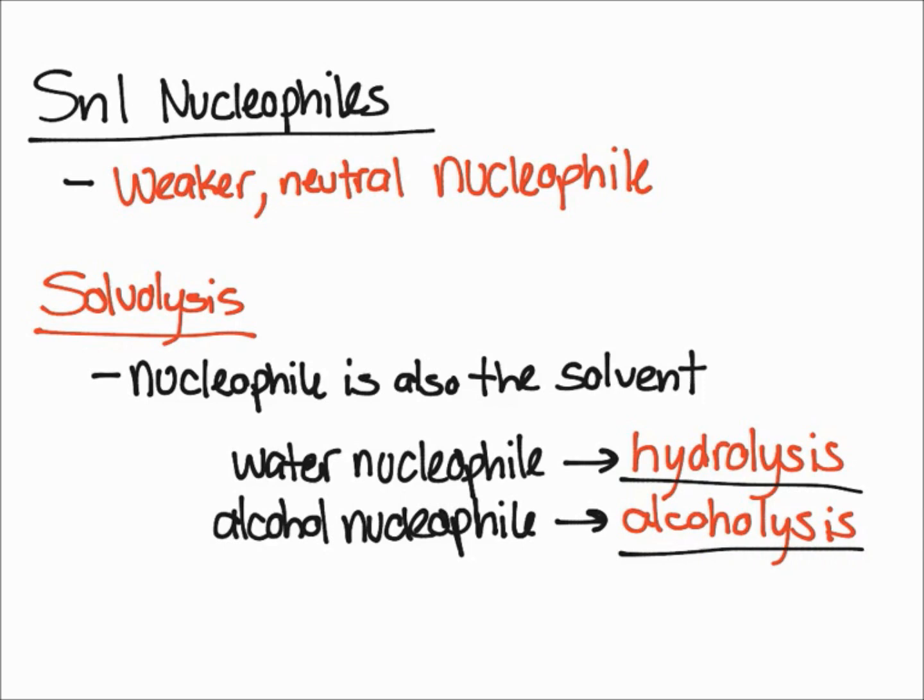And so because of this solvolysis thing, nucleophiles and solvents are often intertwined for SN1 reactions. And next, let's talk about how the solvent can affect the rate of the SN1 reaction.